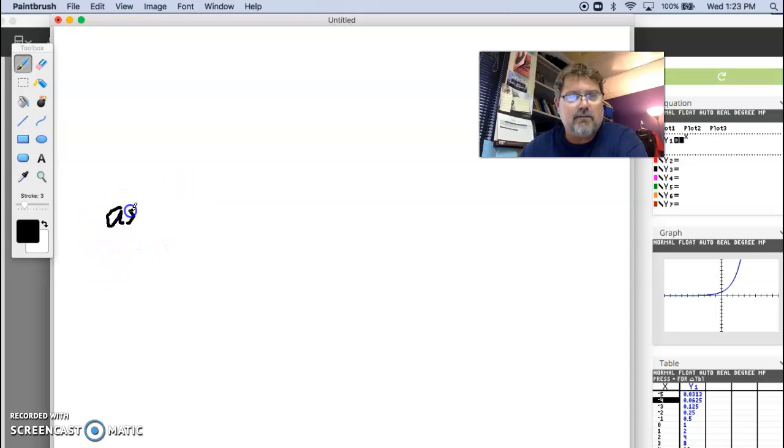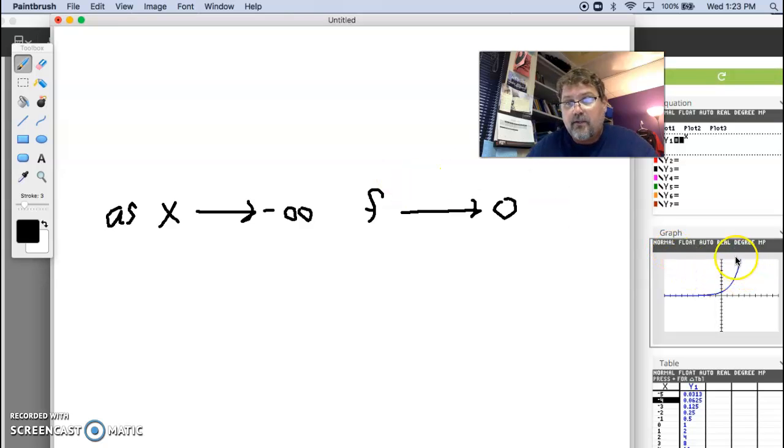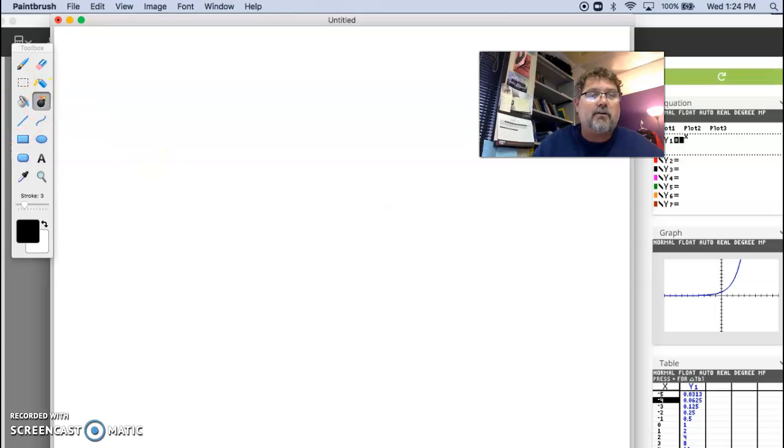So they would say this, as x goes to negative infinity, f approaches 0, right? That's that horizontal asymptote. See it in the graph right here. x is going to negative infinity, f approaches 0. It's called a horizontal asymptote. There are functions with vertical asymptotes, and we'll talk about them later, but I wanted to point that one out for now.